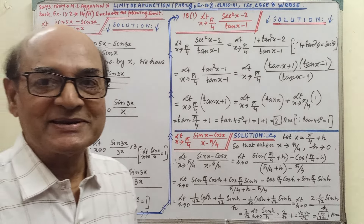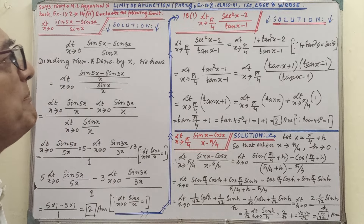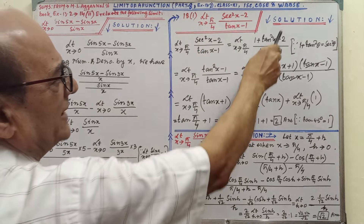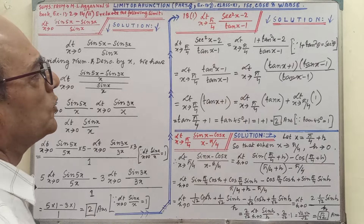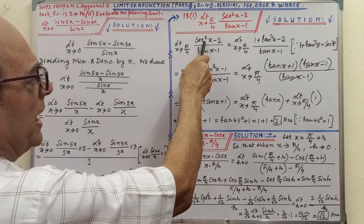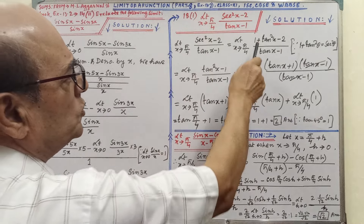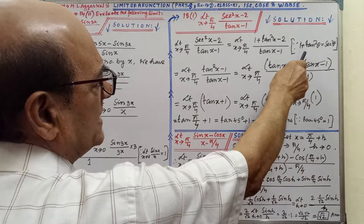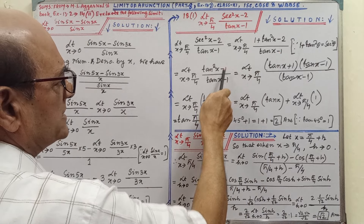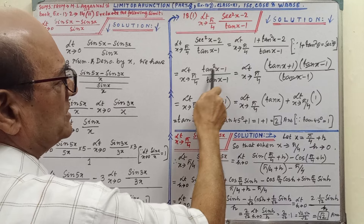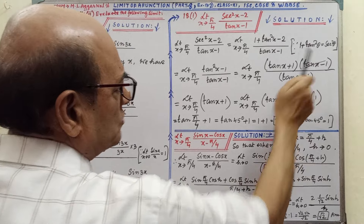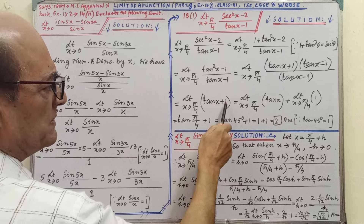Very simple — if you follow the steps you will easily understand. Next, sum 18 part 1; you will get the sum in your book, and here also it is written clearly. Now pay attention on the solution. By looking you have to understand whether this is in the frame of formula or not. This is not exactly, so we have to simplify. In place of sec²x we will write 1 plus tan²x, because 1 plus tan²θ equals sec²θ. Then by simplifying we get tan²x divided by the expression, and using a²−b² = (a+b)(a−b), tan x minus 1 and tan x minus 1 will be cancelled, and finally it comes to tan x plus 1.